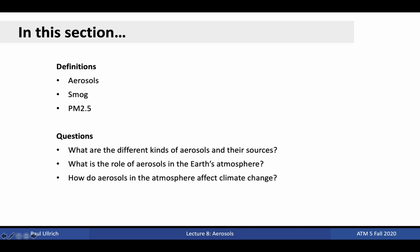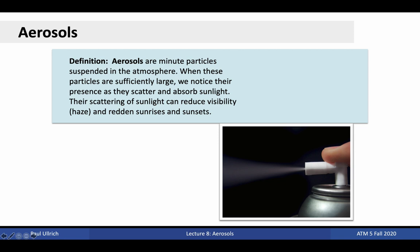By definition, aerosols are minute particles suspended in the atmosphere, typically kept aloft because of their small size. These particles are much larger than individual gas molecules and so behave differently than gases when they interact with radiation. The presence of these aerosols is apparent because of their ability to scatter and absorb light. High concentrations of aerosol are responsible for haze, which can reduce overall visibility. The scattering of red light by these aerosols can also redden sunrises and sunsets.